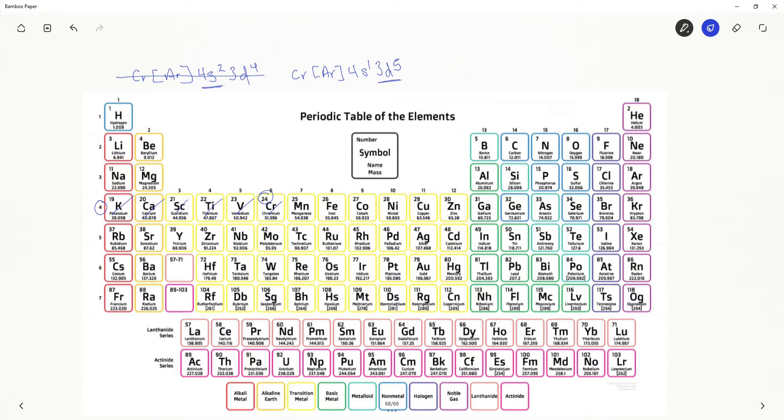So chromium, when it promoted an electron to the 3d orbital, it made that 3d orbital half-filled. This is a lower energy arrangement than just having the 3d orbital partially filled. It's better if you can fill it by half.